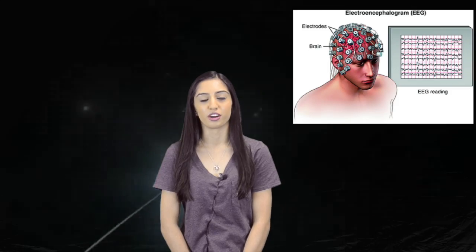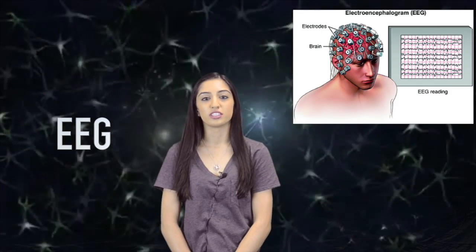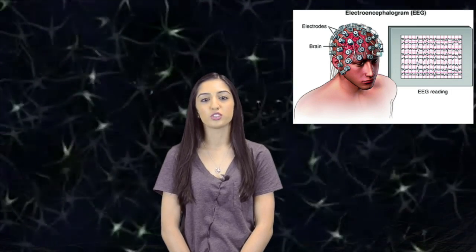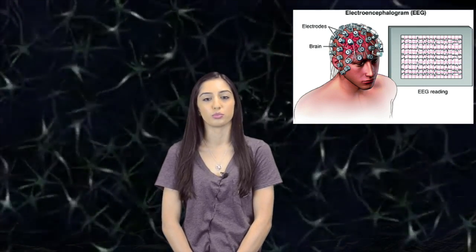First off, electroencephalography — EEGs, shown in this picture — are used to understand brain activity in various psychological states. This procedure is very useful in identifying seizures or other problems that may be caused as a result of too much or too little activity in parts of the brain.